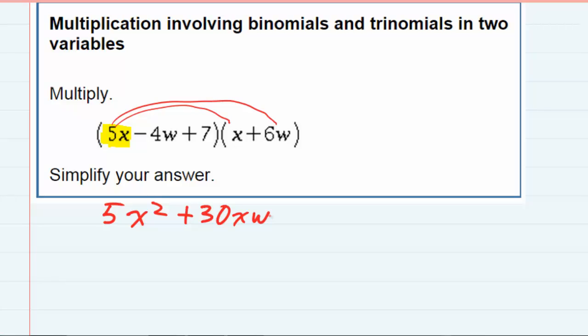We've distributed the 5x. Now I want to distribute the next term, which is -4w. Negative 4w times x would be -4xw. That leading coefficient there is 1, so -4 times 1 gives me -4.